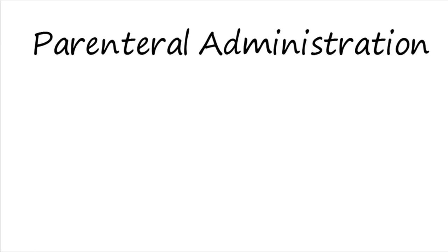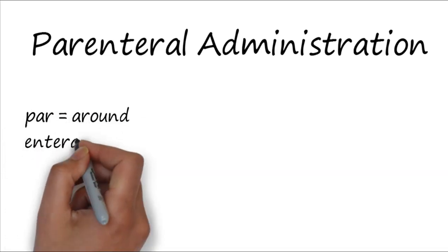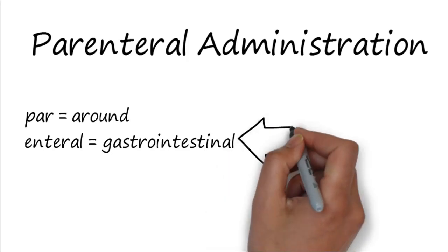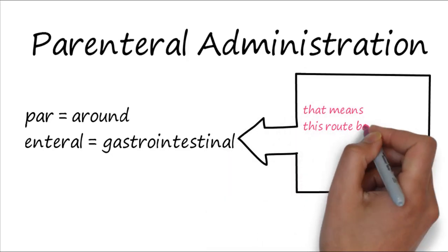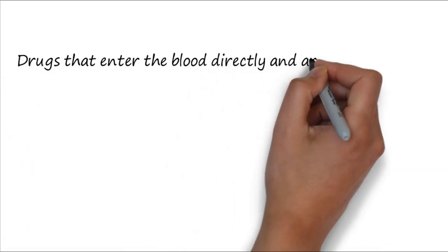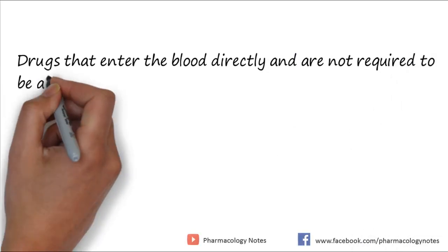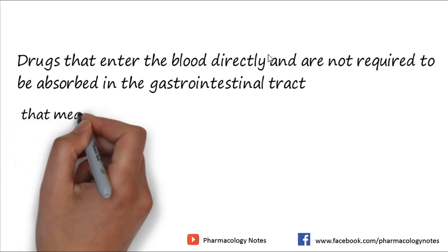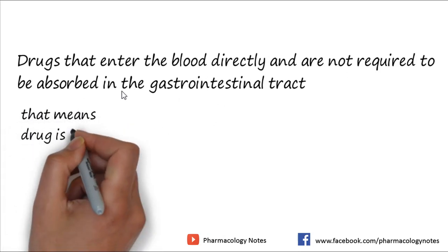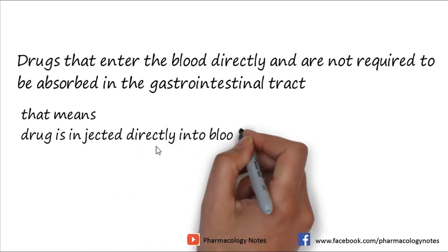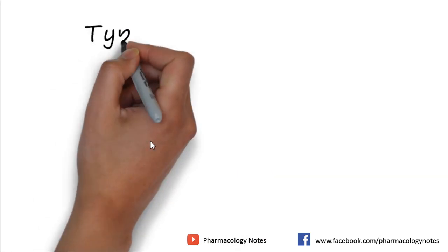Hello. In this video we are going to discuss the parenteral route of drug administration, another important route in pharmacology. 'Para' means around and 'enteral' means intestine, so parenteral means outside the GIT. When we administer any drug by IV administration or parenteral route, the drug directly goes into the systemic circulation and has nothing to do with the gastrointestinal tract — it is injected directly into the blood or systemic circulation.